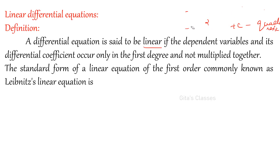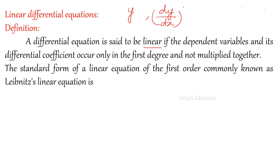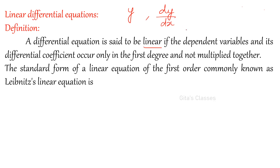Now, in a linear differential equation, the dependent variable y and the differential coefficient dy/dx can have power 1 only, not more than that. If it is having power 2, then it is not linear. For the independent variable x, you can have any other function — no problem. But the dependent variable and differential coefficient must occur only in the first degree and not multiplied together. You cannot have y times dy/dx. So only dy/dx with power 1 and y also power 1; the remaining independent variable x can be in any other function.